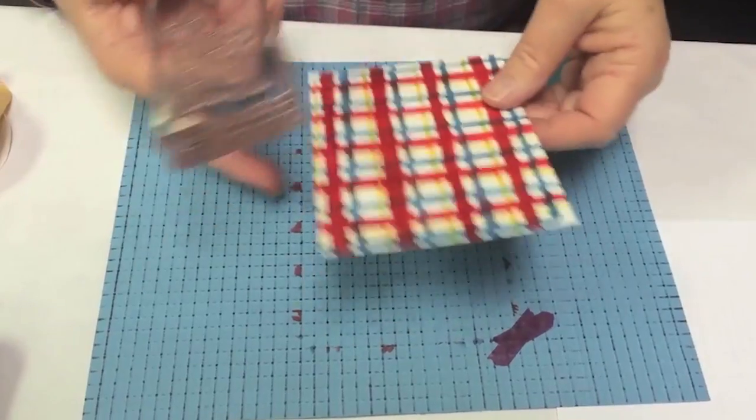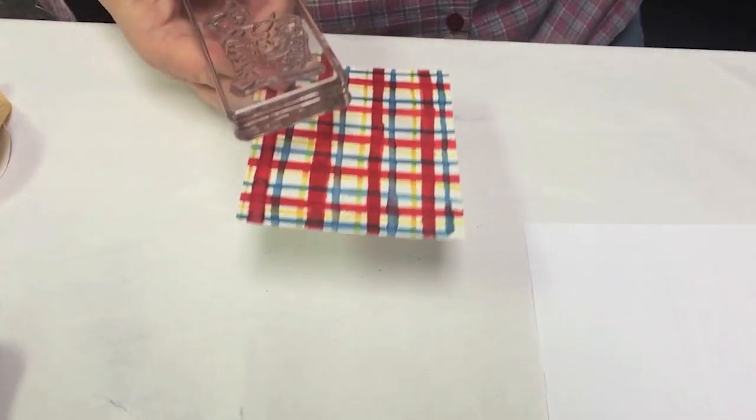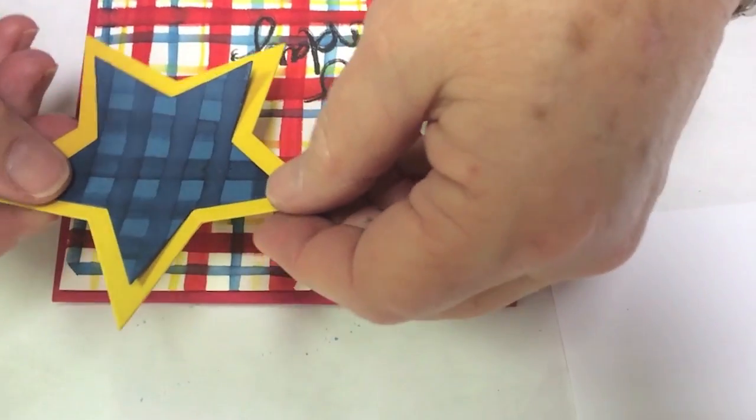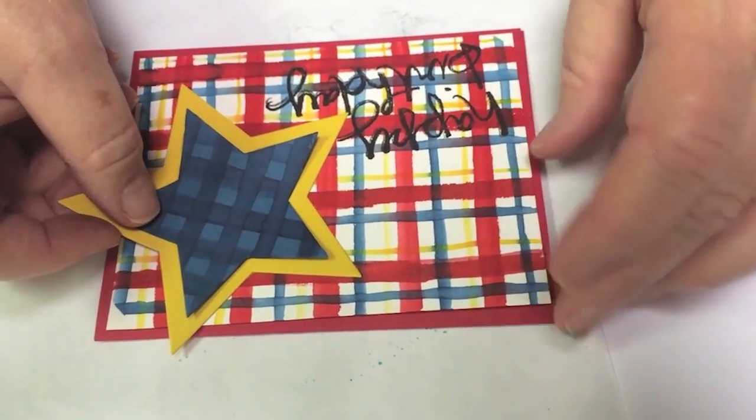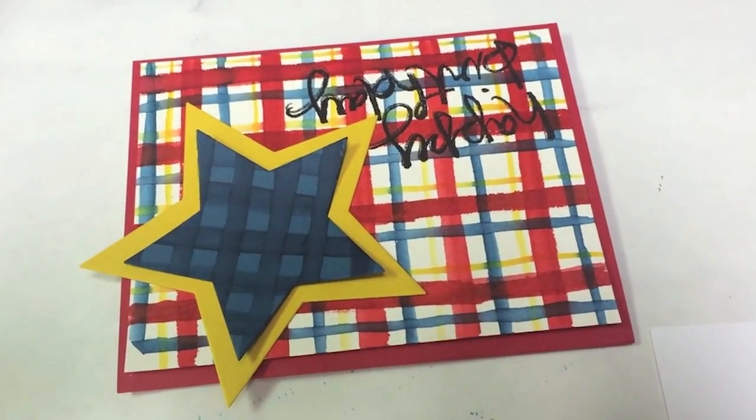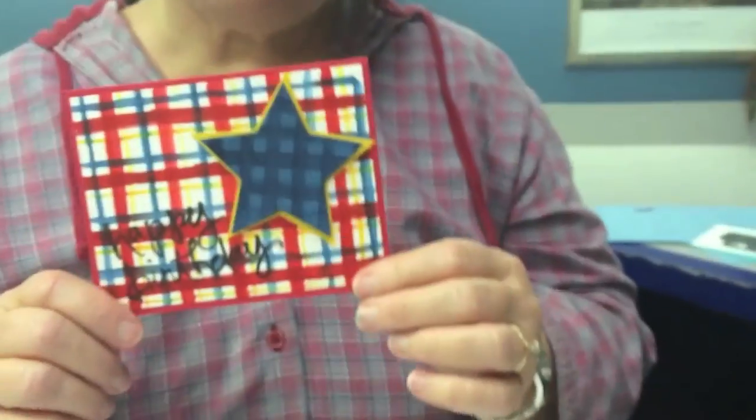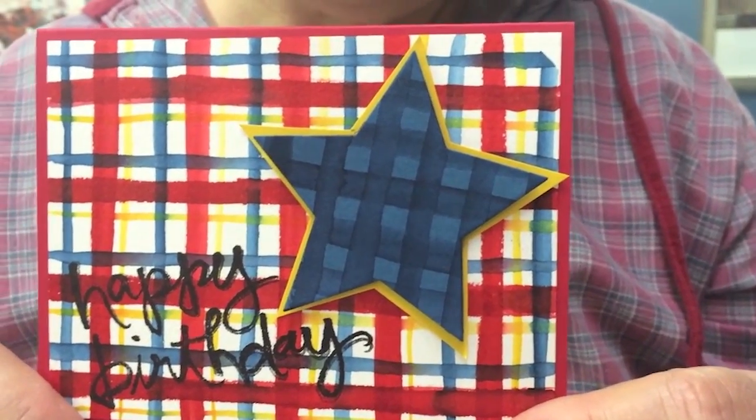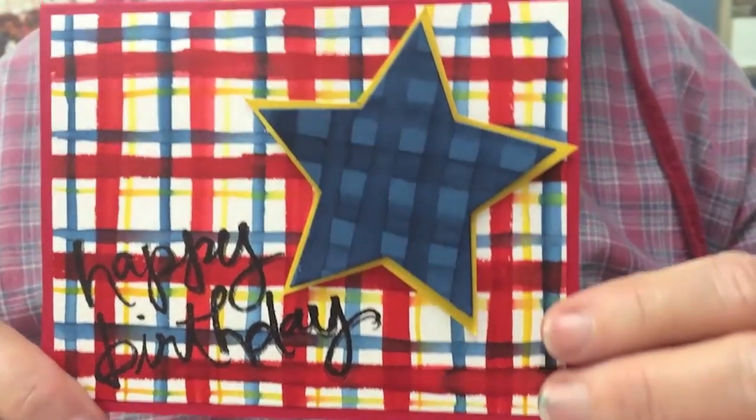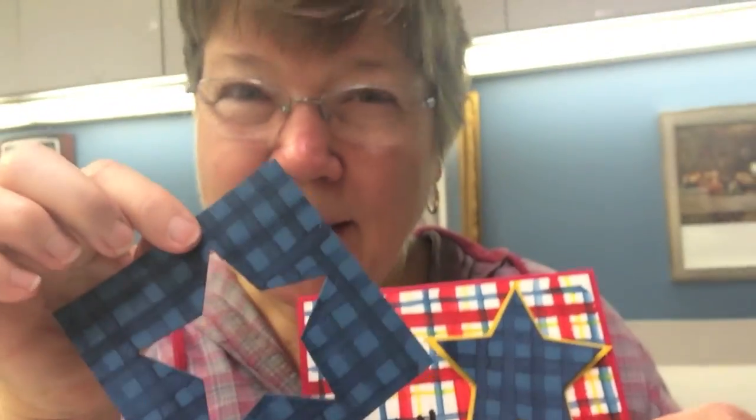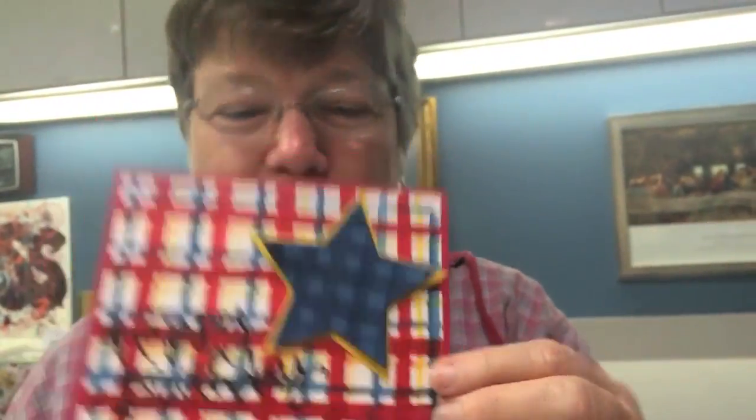Here we go. This is the fun part. We get to take it off and make a card. We cut our other plaid into a star and it's going to go just like that. Here's our finished product. Two plaids together. Your mom always told you not to do that, but I think it works. And you've got the bonus negative piece that you can use on another card. Happy plaid!